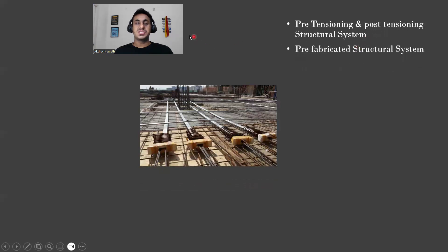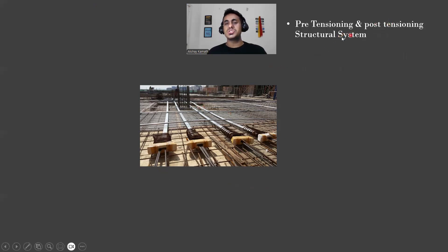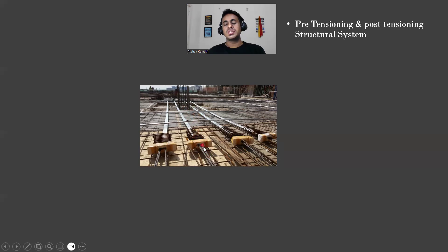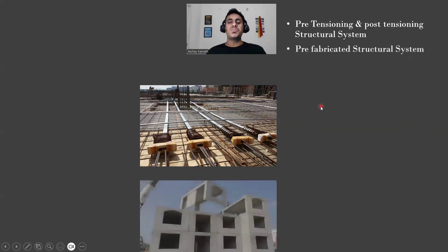Next is the pre-tensioning and post-tensioning structural system, used in commercial buildings like large malls and theaters. Here, along with normal reinforcement bars we use tendons. Normal rebar has a tensile strength of 500–550 MPa, whereas tendons have 1000–2000 MPa. Using this system keeps the slab thickness manageable. Pre-tensioning means you stress the tendon before pouring concrete; post-tensioning means you stress the tendon after pouring the concrete.